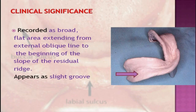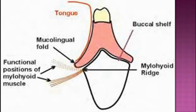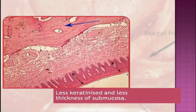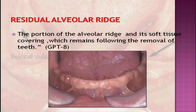Regarding microscopic structure, the mucous membrane covering the buccal shelf area is more loosely attached and less keratinized than the mucous membrane covering the residual alveolar ridge. It may not be as suitable histologically to provide the primary support for the denture as the mucous membrane overlying the crest of the ridge.